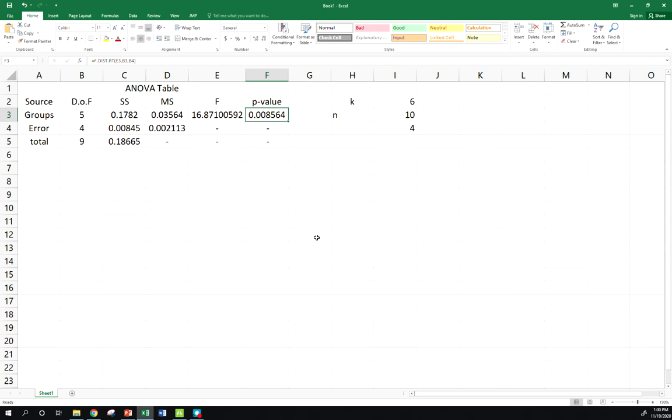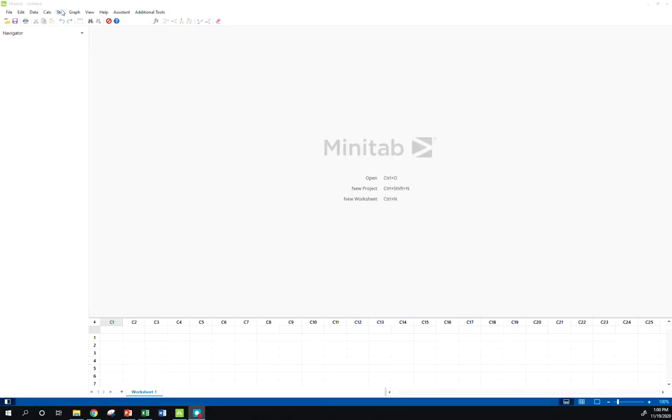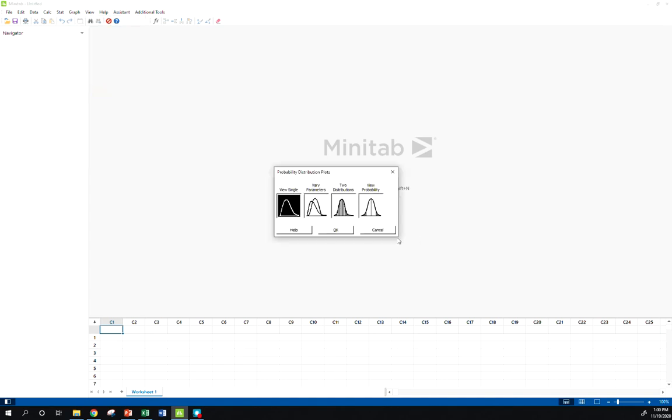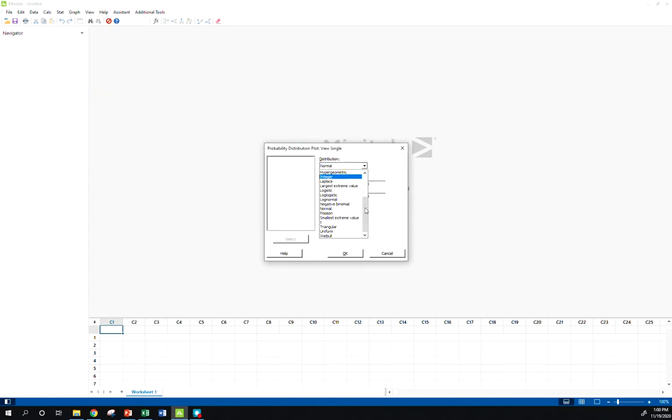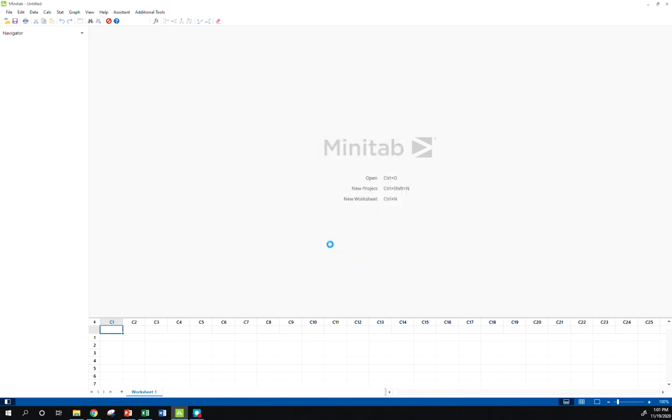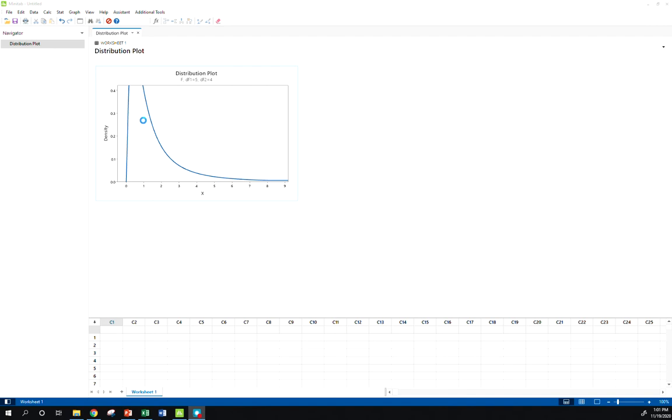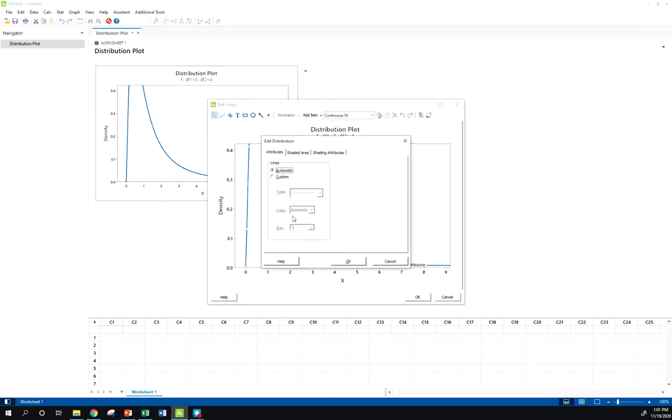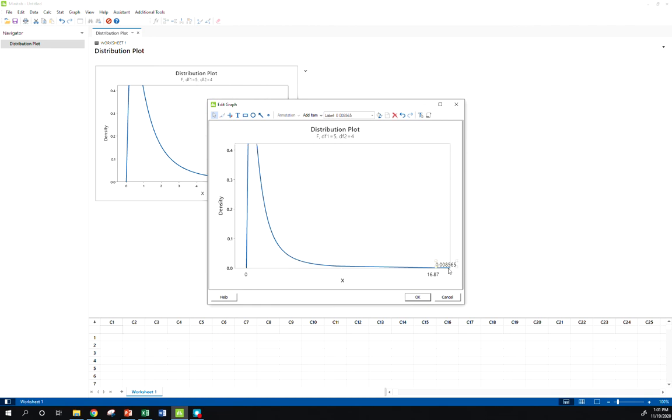You also have an F distribution graph in Minitab if you wanted to do that. I can go to graph, probability distribution plot, view single. We want the F distribution, numerator five, denominator four. Here's our F distribution. Double-click shaded area, x value, right tail—and I believe here is what—16.87. It's telling me that area is very, very small.